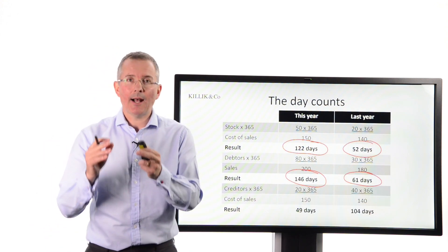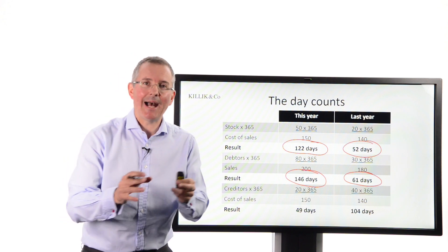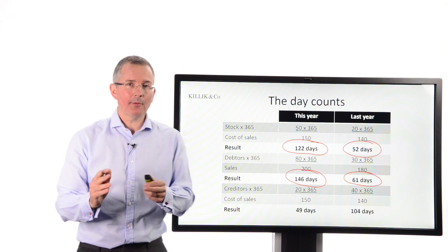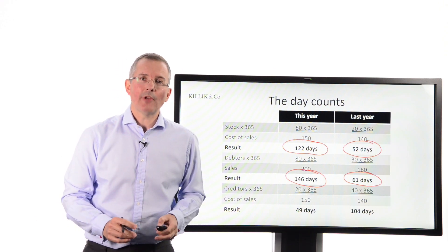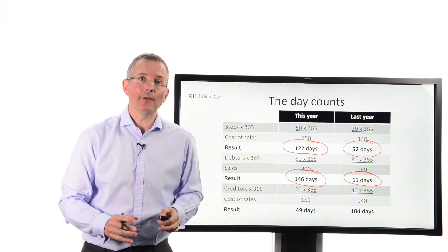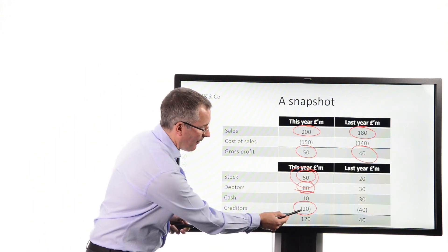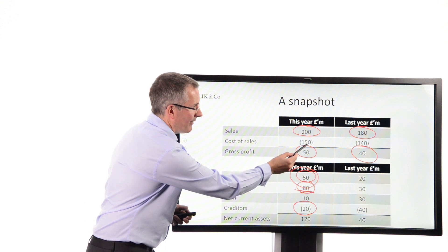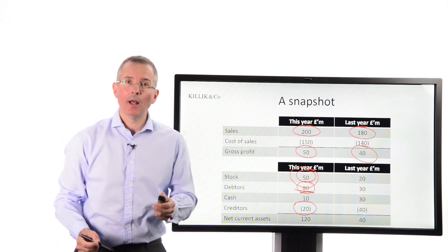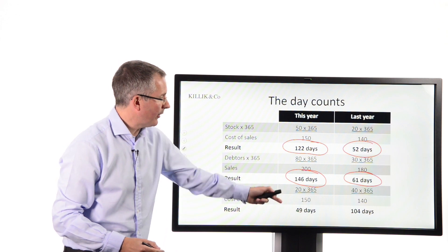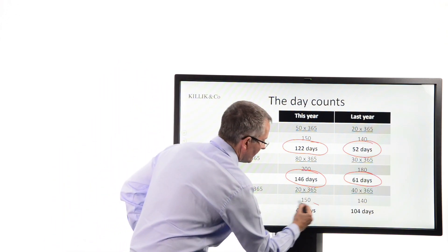Finally, how long on average is it taking us to pay our suppliers? Well, that's looking at creditors times 365 over cost of sales. Creditor days, it's known as. And again, picking numbers off of here. There's your creditors figure down there. Here's the relevant cost of sales number at the top. And as a number of days, what would that look like? And the answer is 49 this year, 104 last year.